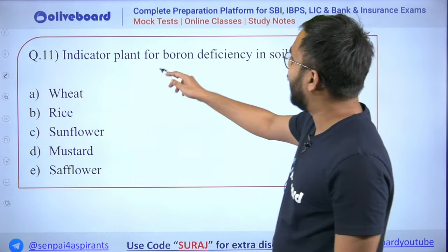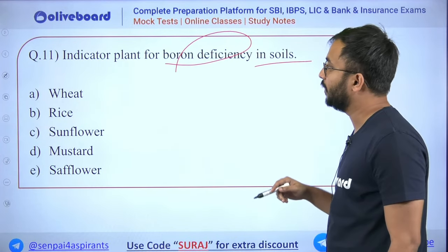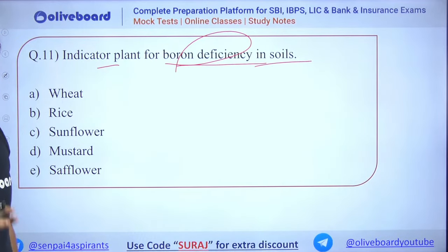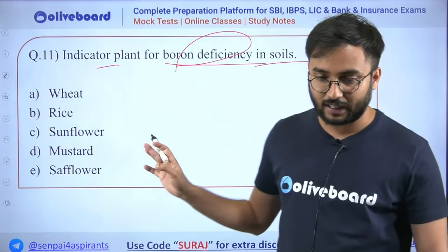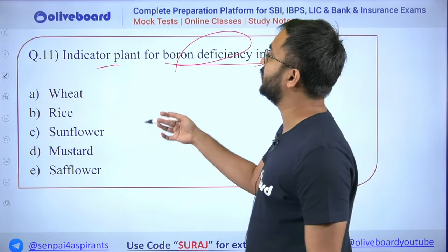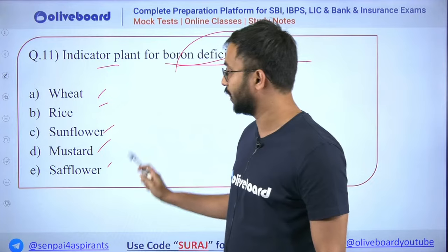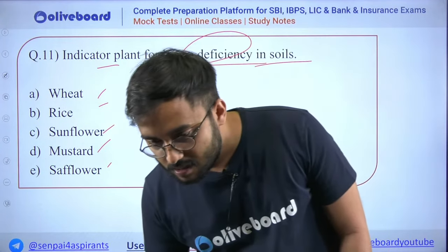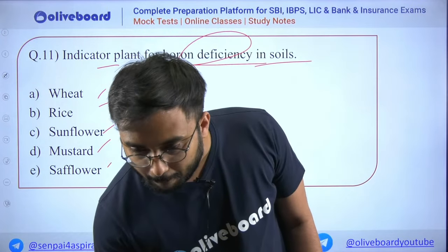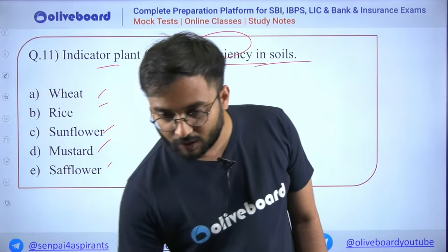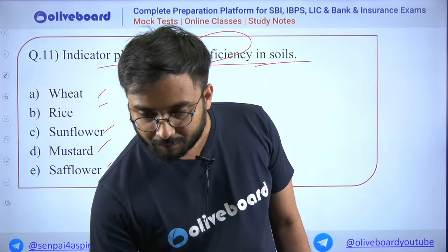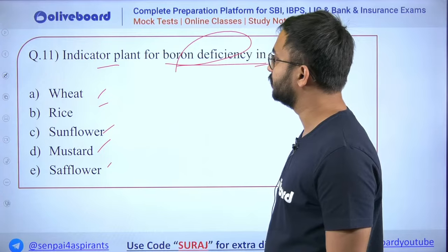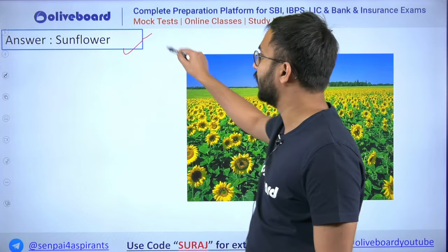Next: indicator plant for boron deficiency in soils — wheat, rice, sunflower, mustard, or safflower? The answer is sunflower. Wheat and rice are out of the box. The answer boils down to sunflower, mustard, and safflower — requires vast reading. But this is what PYQ analysis is: understanding that deficiency-related questions repeat and associated plants for each nutrient deficiency should be prepared.